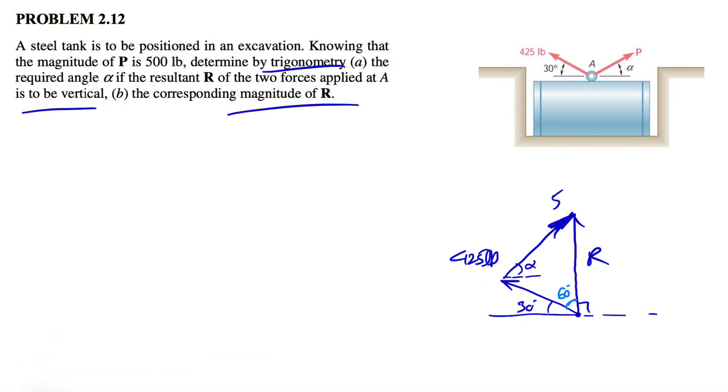So we know the force P is also 500 pounds, and this angle right here would be 30 degrees too. We have these two parallel lines that this one crosses, so these two are the same, both 30 degrees.